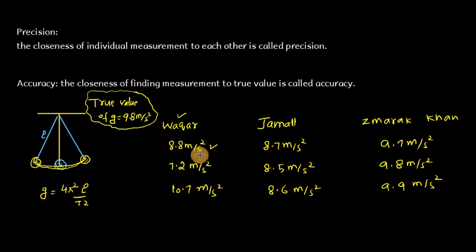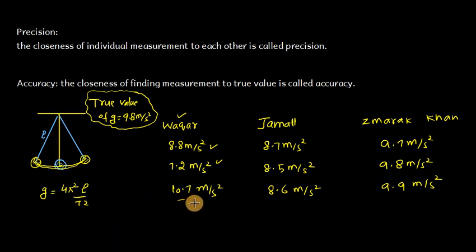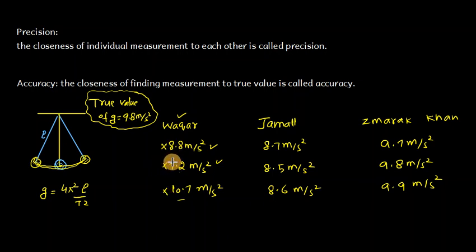In one experiment, the measured value of gravitational acceleration g is 8.8 m/s². In another, it is 7.2 m/s². In a third experiment, g is measured as 10.7 m/s². The true value of g is 9.8 m/s². These individual results are not close to each other, so the readings are not precise, and most are not close to 9.8 m/s², so they are also not accurate.